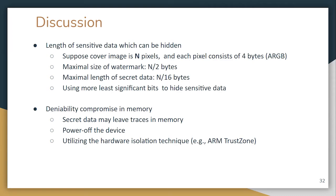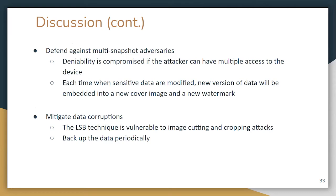The second discussion point is deniability compromise in memory. Since MobiWear relies on memory for calculations, secret data may leave traces there. To mitigate this, the device owner can power off the device after hiding or extracting sensitive data, or use hardware isolation techniques such as ARM TrustZone. The third issue is defending against multi-snapshot adversaries: deniability could be compromised if an attacker has multiple accesses to the device and detects changes in the stego image when data is updated. A potential solution is to embed new versions of data into a new cover image and watermark each time sensitive data are modified.